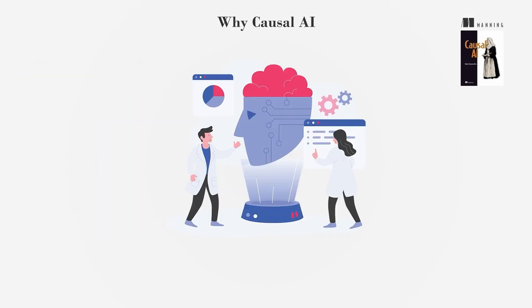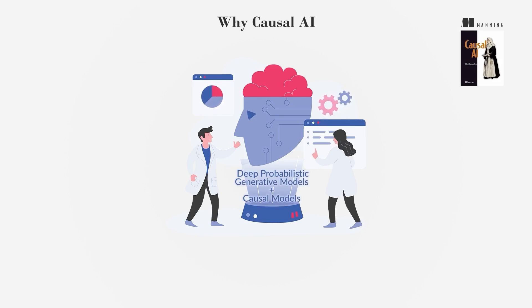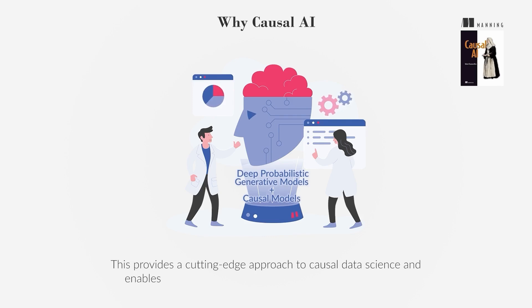Causal AI is the first book to combine deep probabilistic generative models with causal models. This provides a cutting-edge approach to causal data science and enables new AI algorithms for automating causal reasoning.